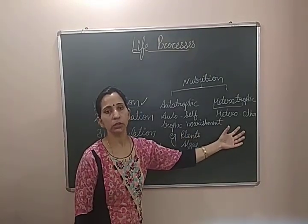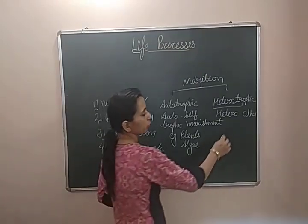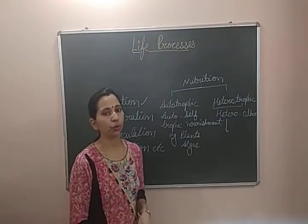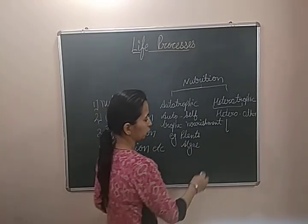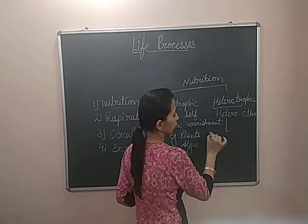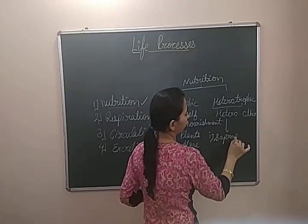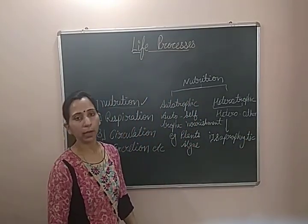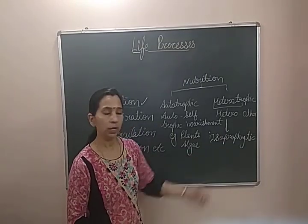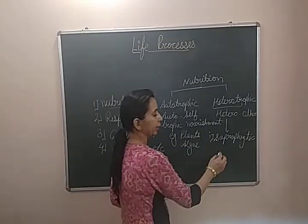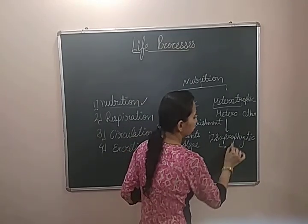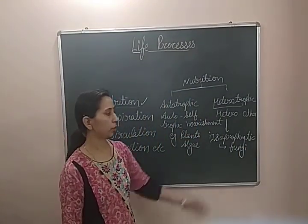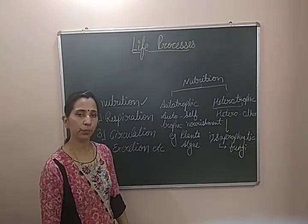Heterotrophic nutrition is further divided into different types on the basis of how organisms get their nutrition from other organisms. The first type is saprophytic nutrition, which is the process in which organisms depend on dead and decaying organisms for their nutrition. Such nutrition is known as saprophytic nutrition, and organisms that do this are fungi, which take their nutrients from dead and decaying material.